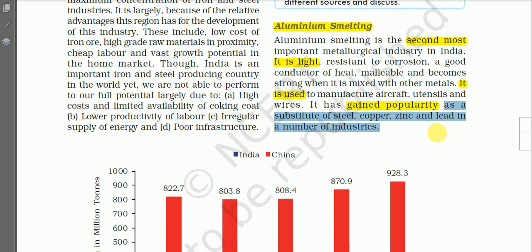Copper, zinc, and lead are very rare on the outer surface of the Earth, so aluminum has replaced them wherever possible.